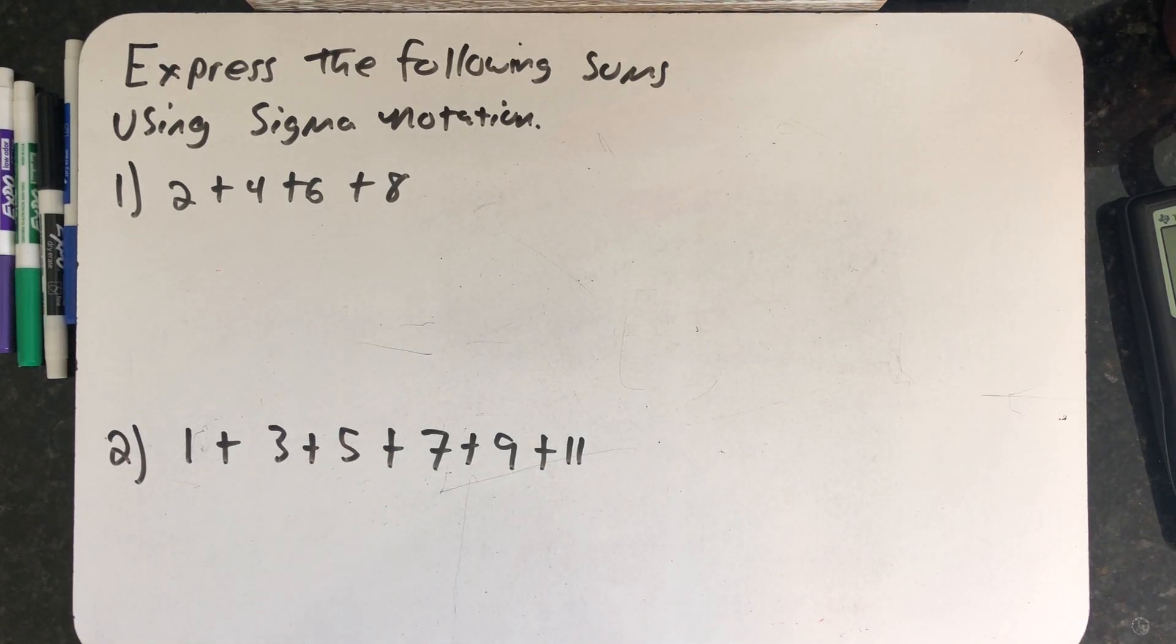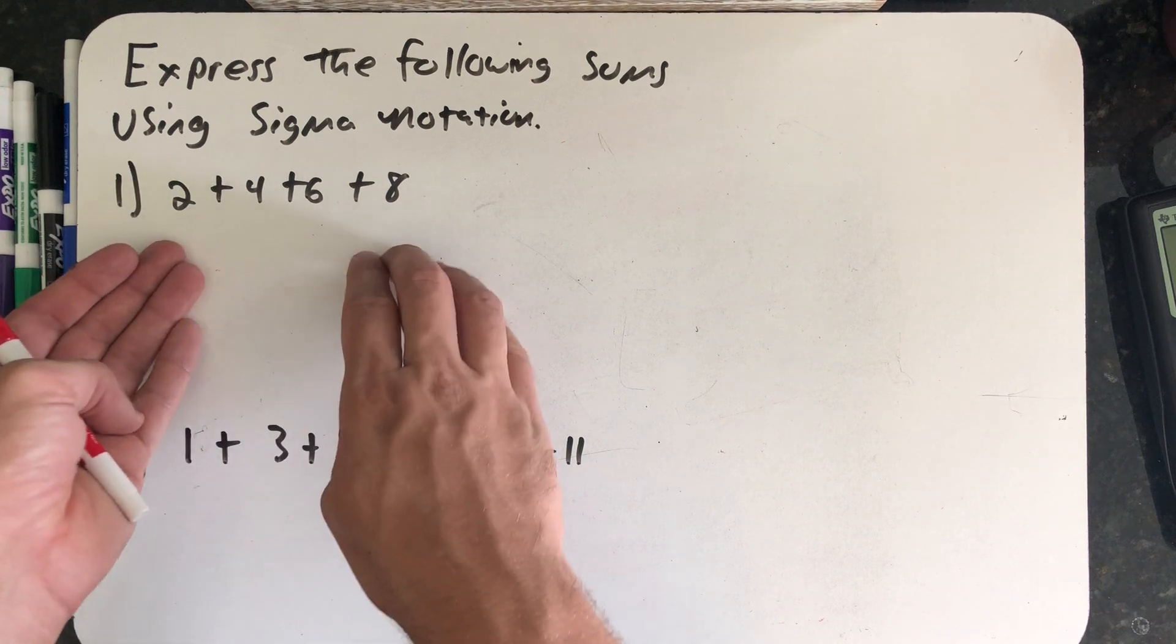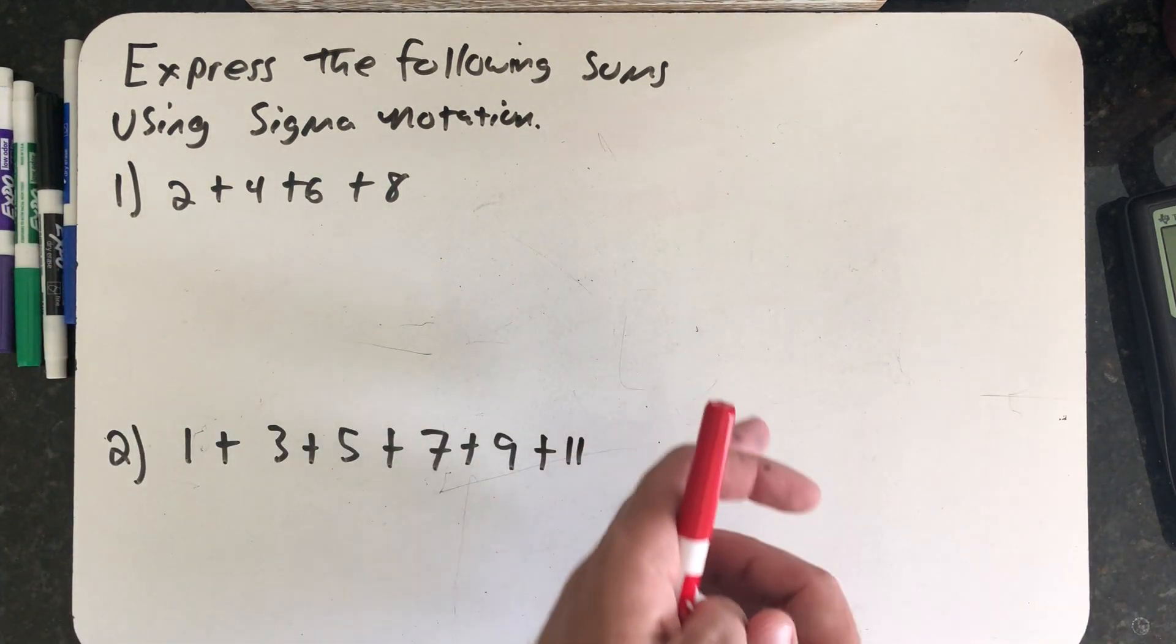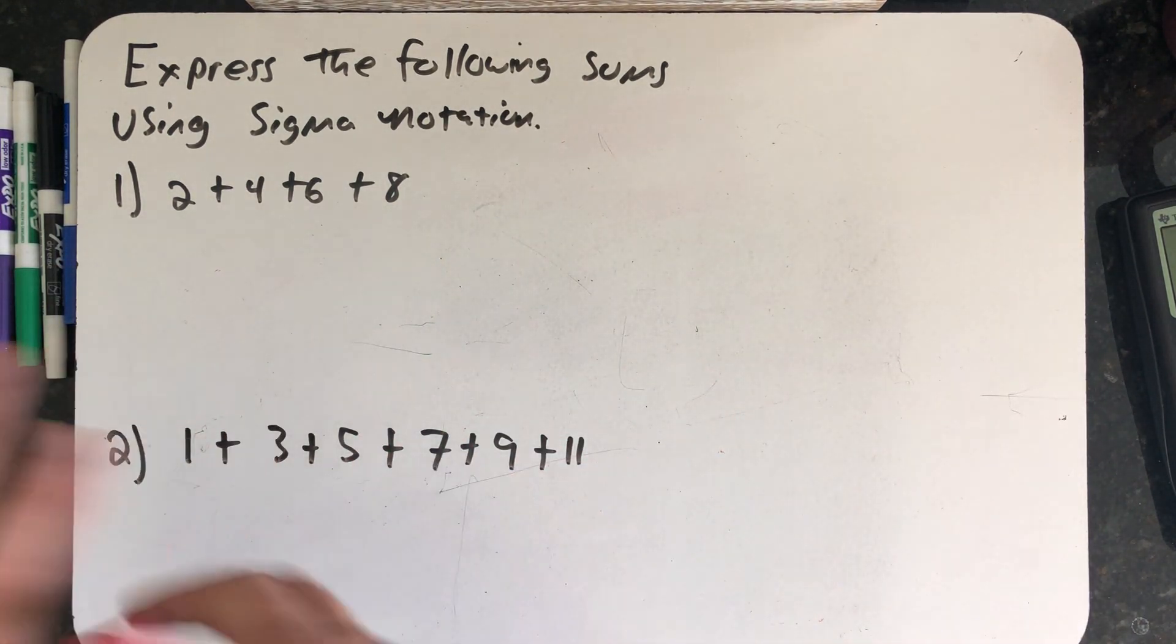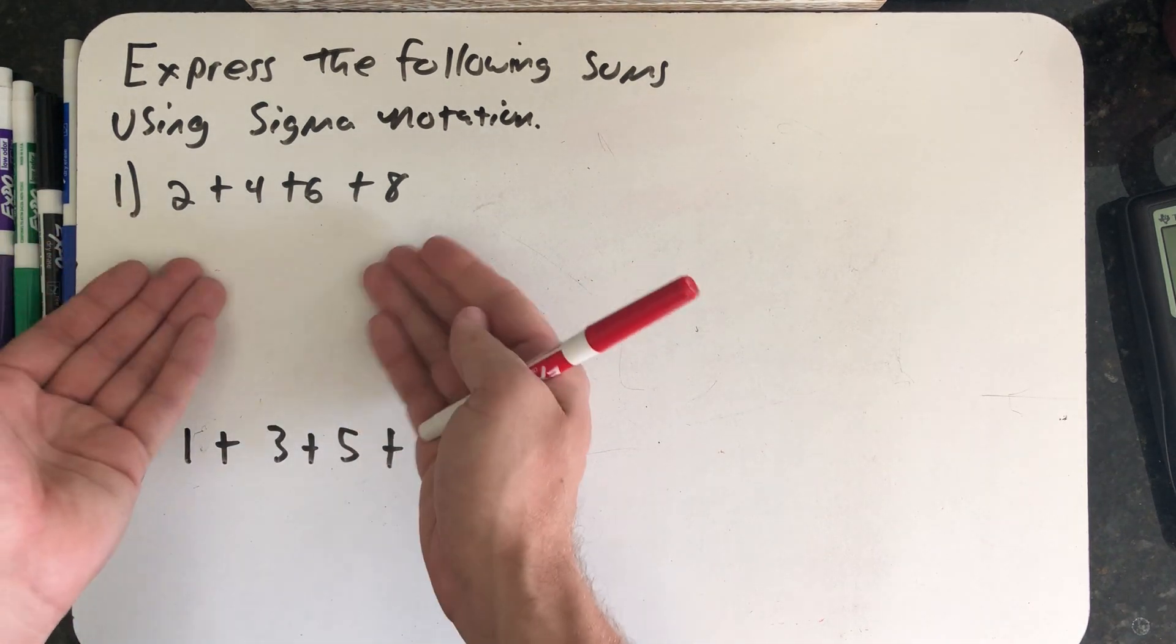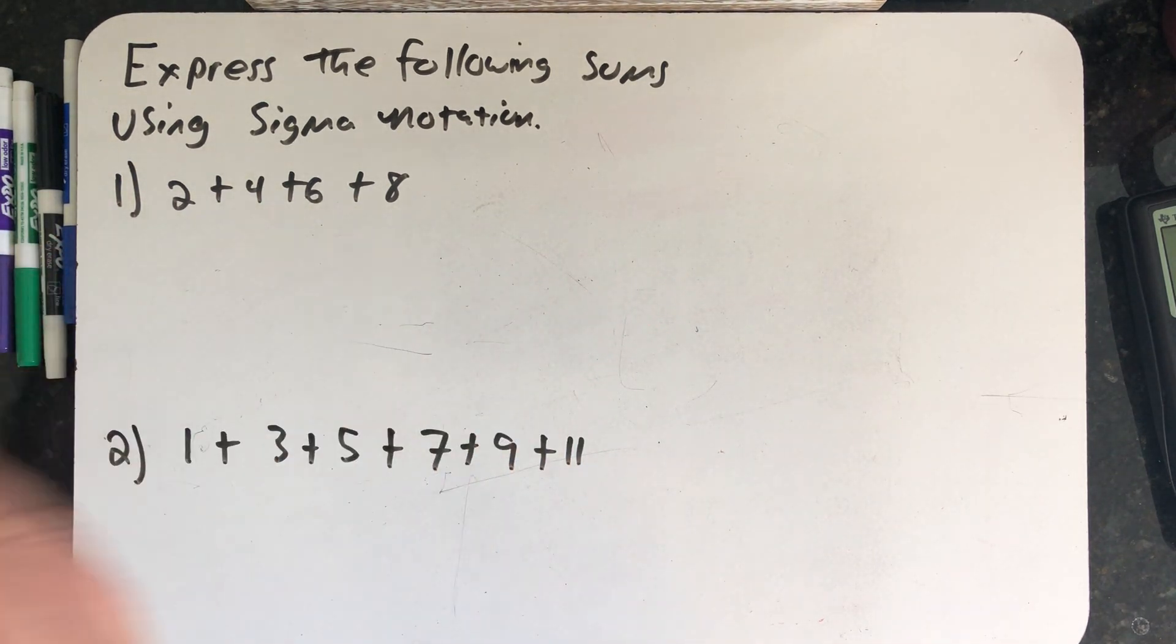In our last video we were introduced to sigma notation and used that notation to take a sum expressed in sigma notation and write it out to find a number. This set of problems wants us to work in the other direction. It gives me a finite sum written out and wants me to express it in sigma notation.